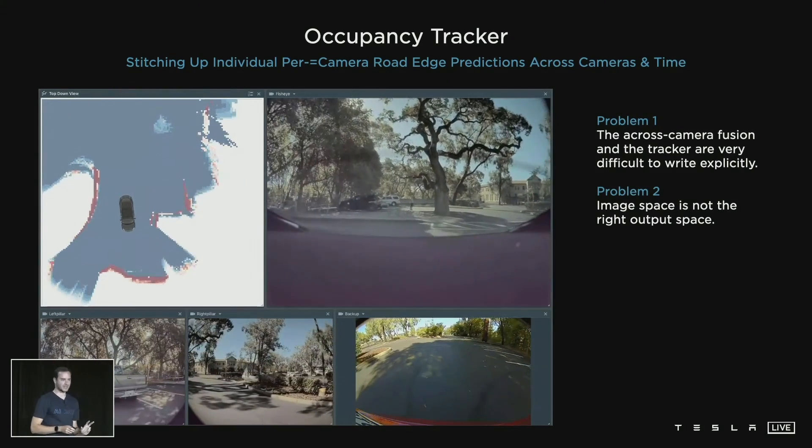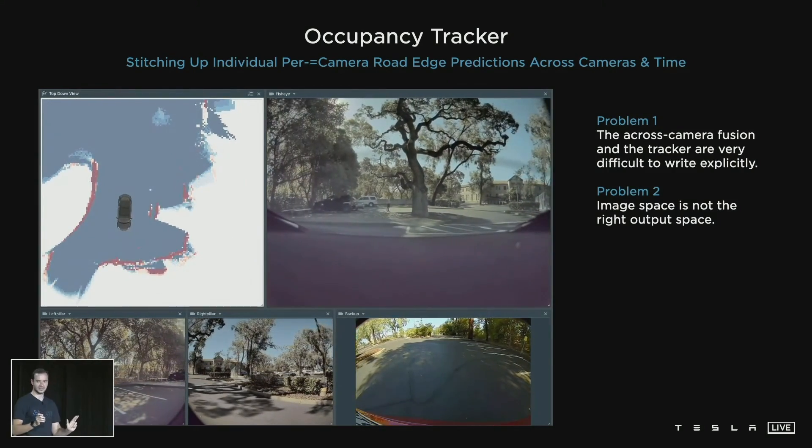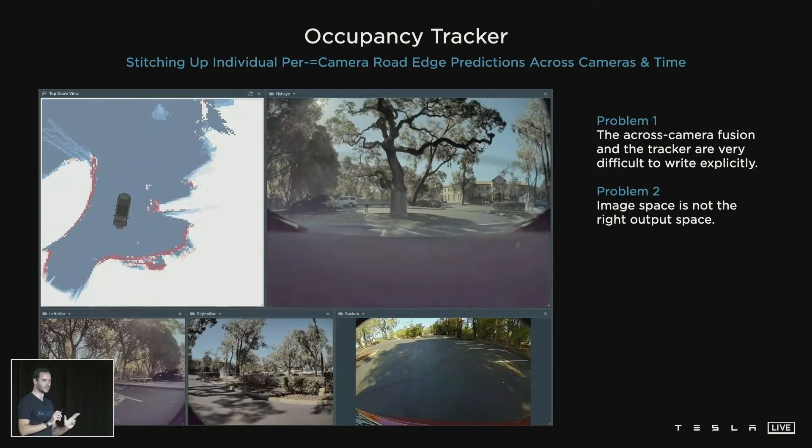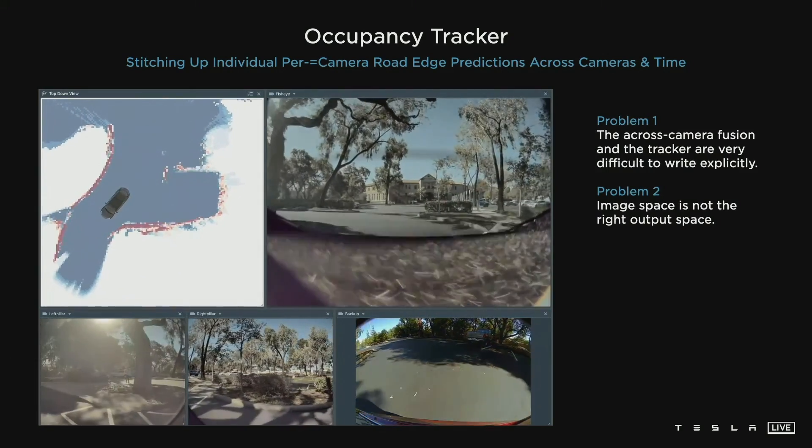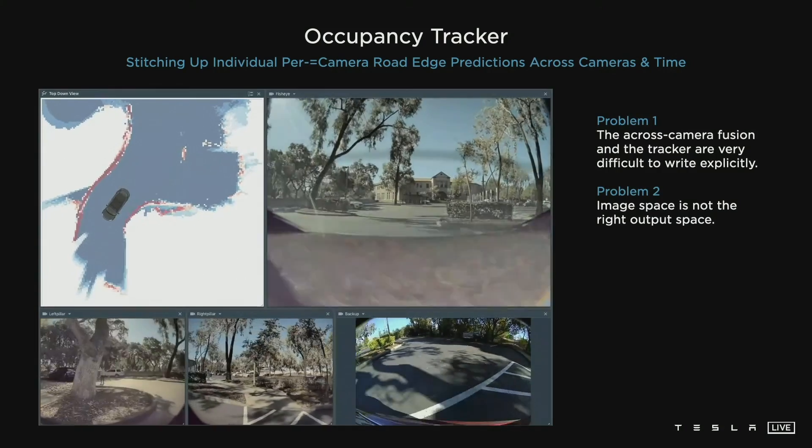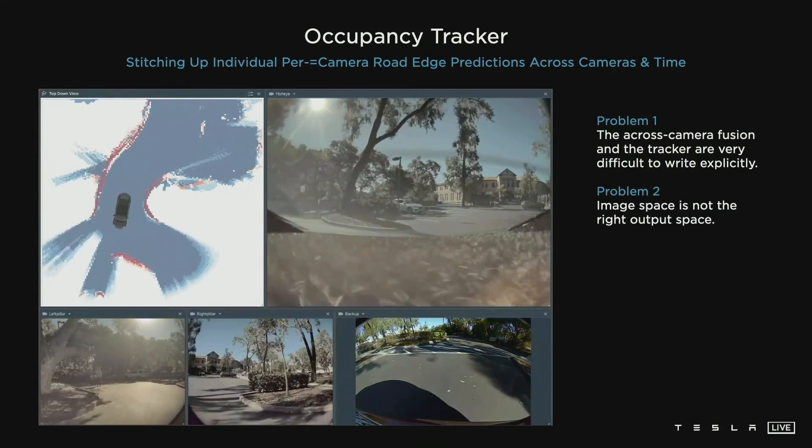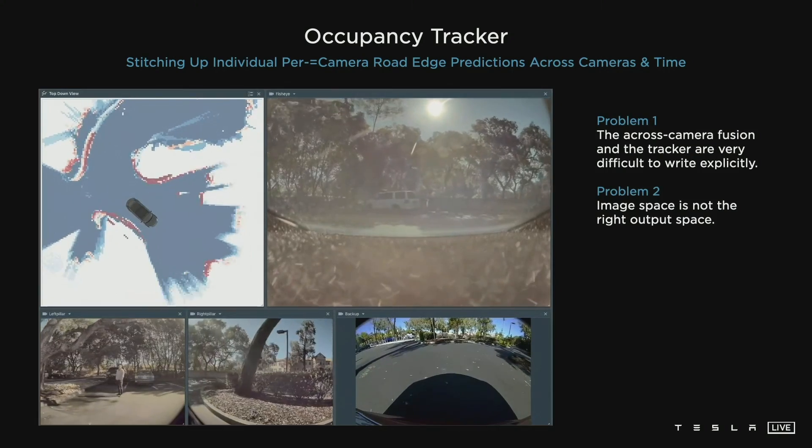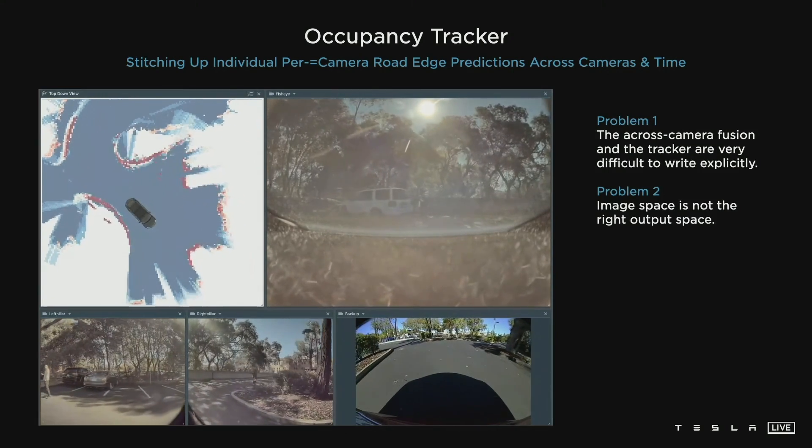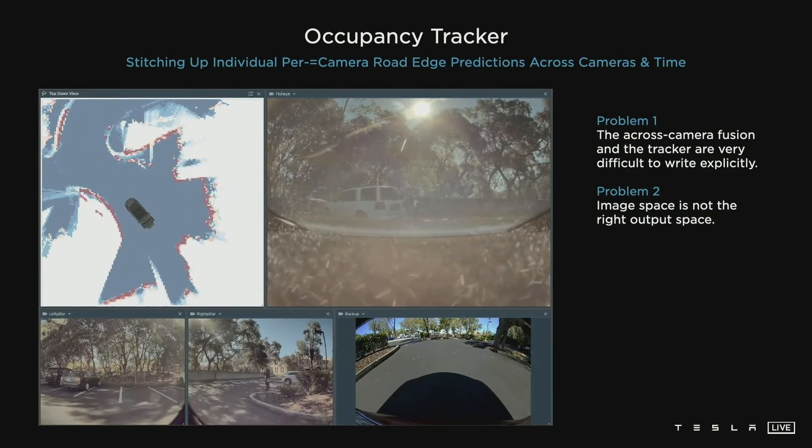There were two major problems with the setup. Number one, we very quickly discovered that tuning the occupancy tracker and all of its hyperparameters was extremely complicated. You don't want to do this explicitly by hand in C++, you want this to be inside a neural network and train that end-to-end. Number two, we very quickly discovered that the image space is not the correct output space. You don't want to make predictions in image space, you really want to make it directly in the vector space.